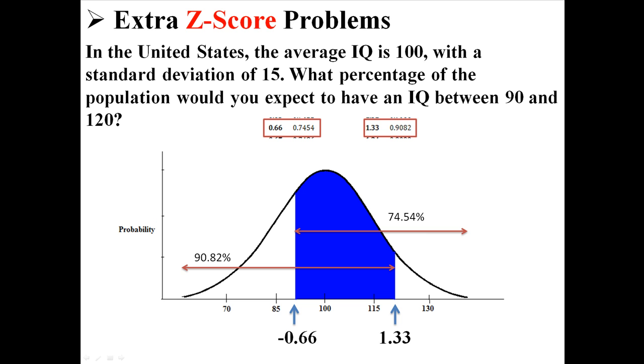So let me draw that on the graph represented by those two red double-sided arrows. So for negative 0.66, you can see that the area in the body, the area in the larger portion, is 74.54%. And for 1.33, the area in its body, in its larger portion, is 90.82%. Now, remember that we want to find the area that's in the blue shaded area. So how can we do that?